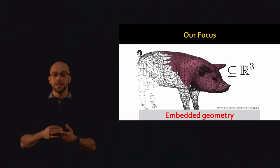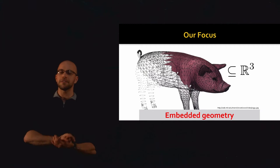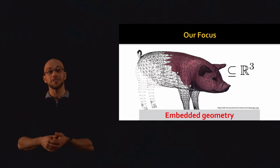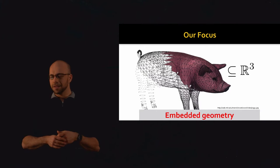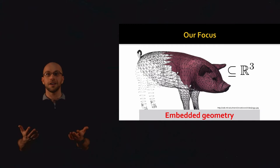Later on, when we discuss Riemannian geometry, we're going to try and distance ourselves from this Euclidean perspective a little bit, and ask whether we can define what it means to be a surface, or more generally a manifold, without relying on the geometry sitting in Euclidean space. But that's a more advanced perspective, requiring calculations and definitions that are a lot more abstract. So for now, we're going to stick with the more concrete case of embedded geometry, mostly embedded just in 3D, so we can actually look at it.